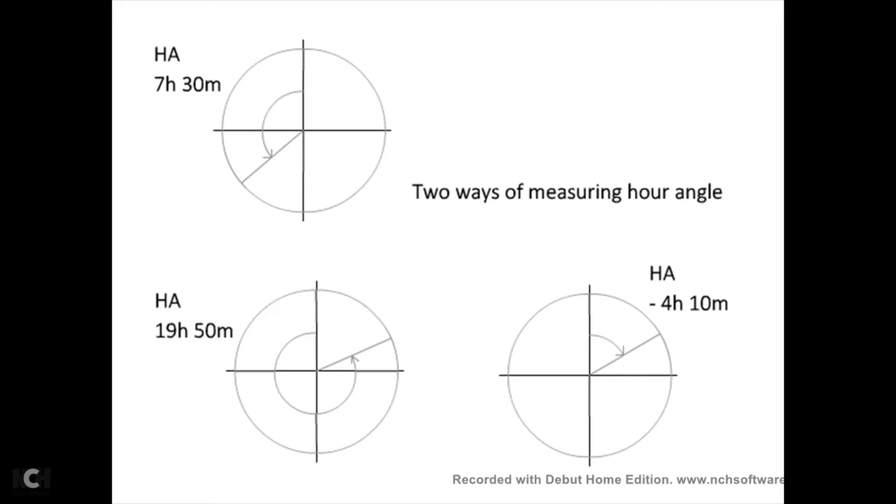However, if it's more than that, now you can either say that the hour angle is 19 hours and 50 minutes, or you can say it's minus 4 hours and 10 minutes. So what I'm saying is that if it's west of your meridian, it's positive. If it's east of your meridian, it's negative.